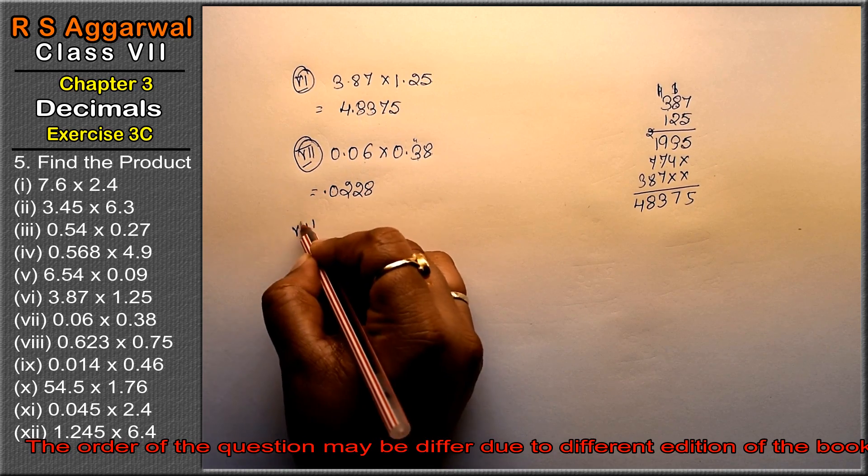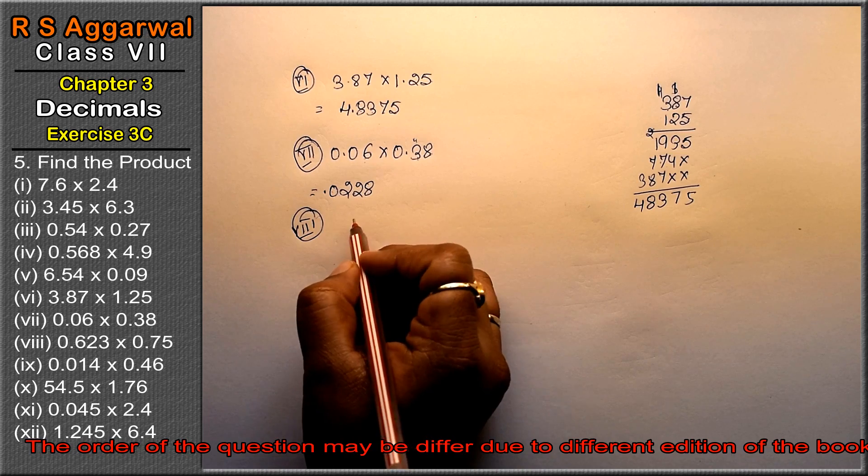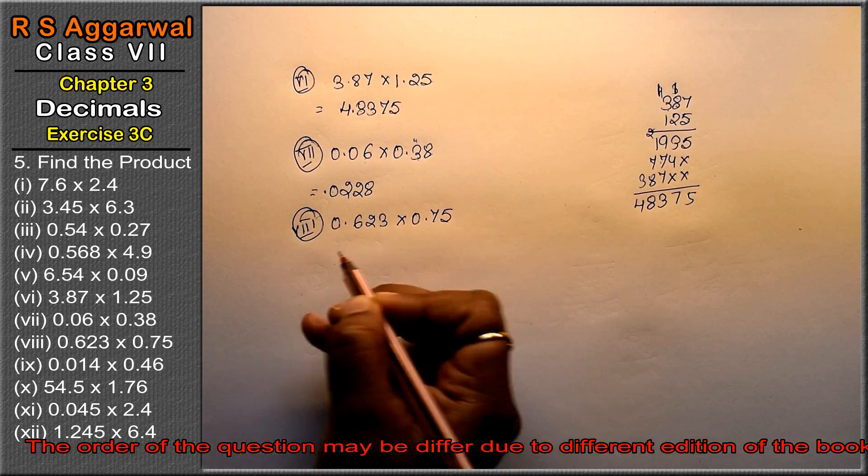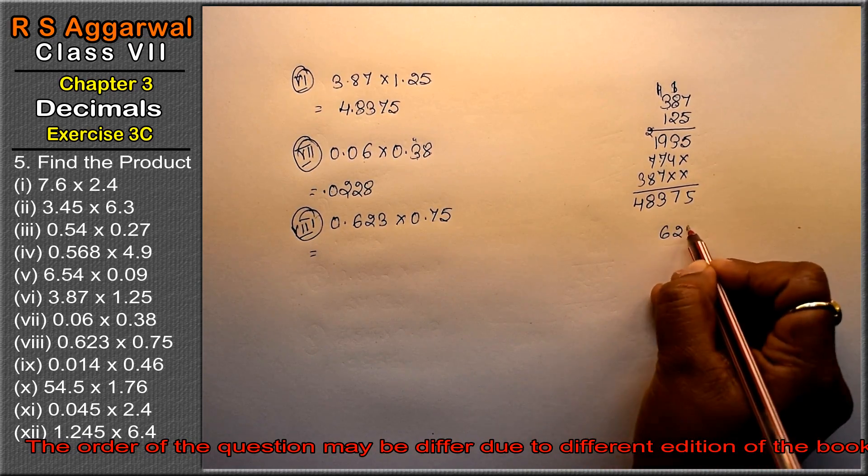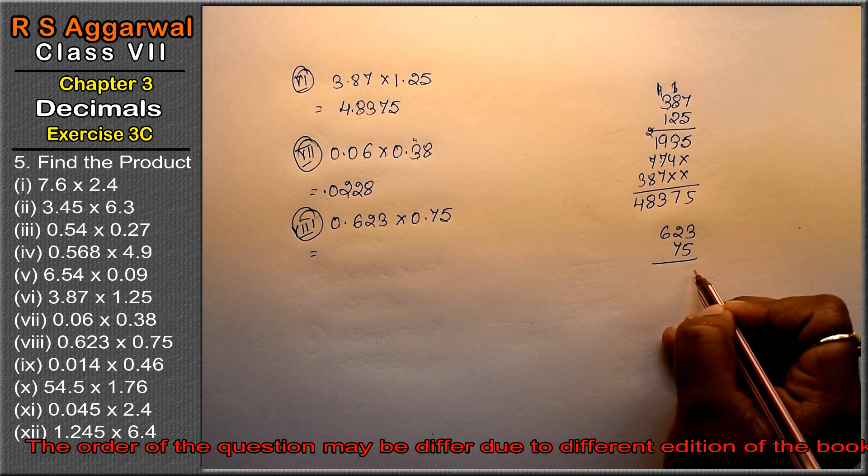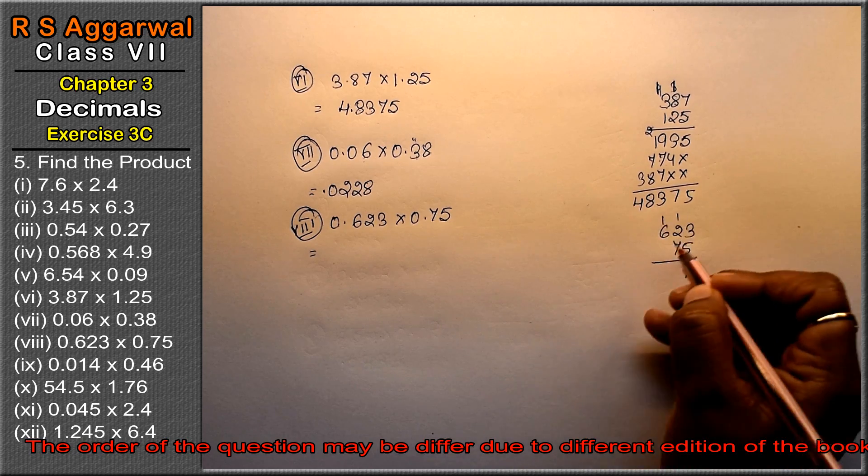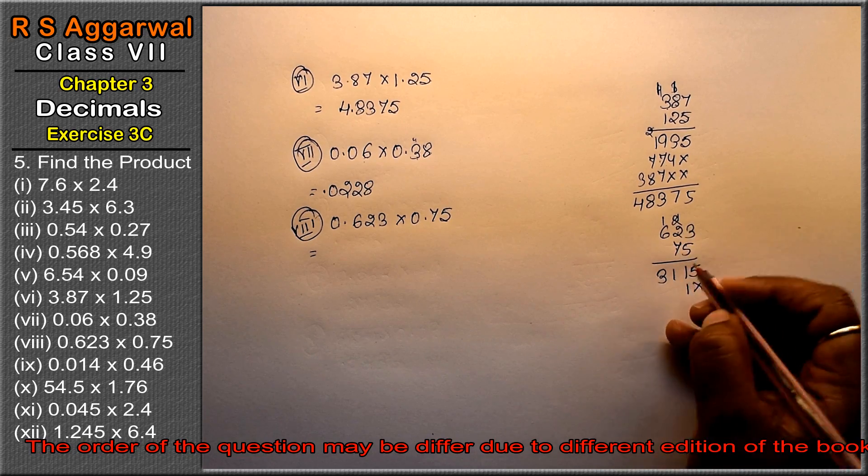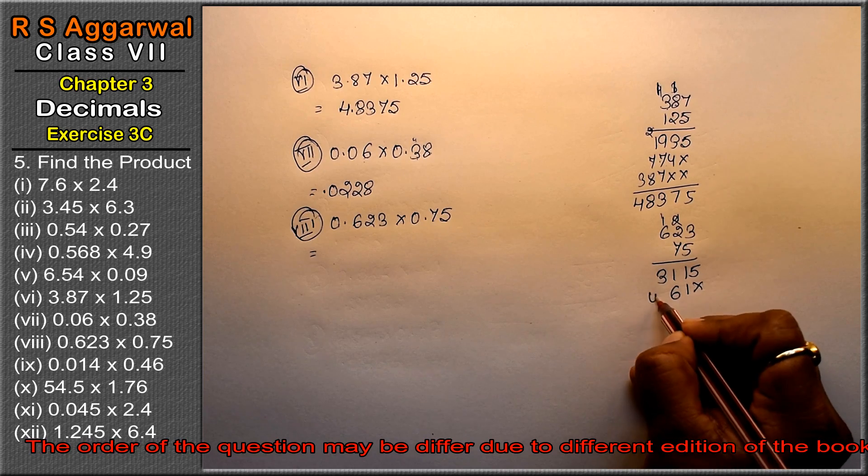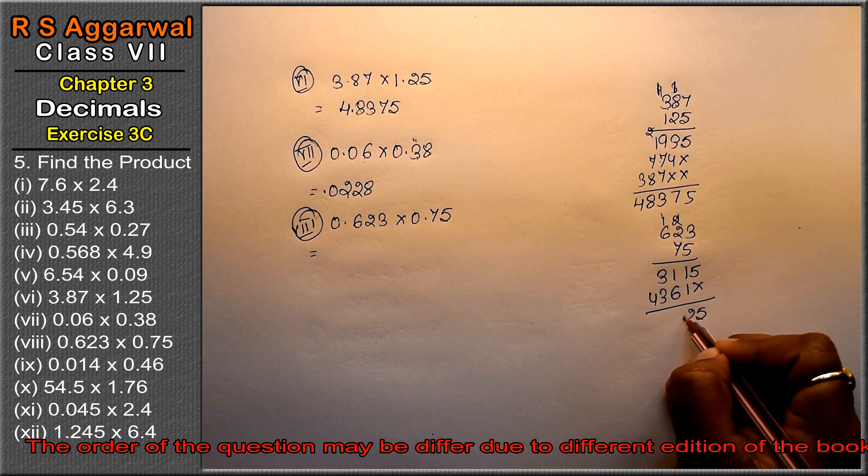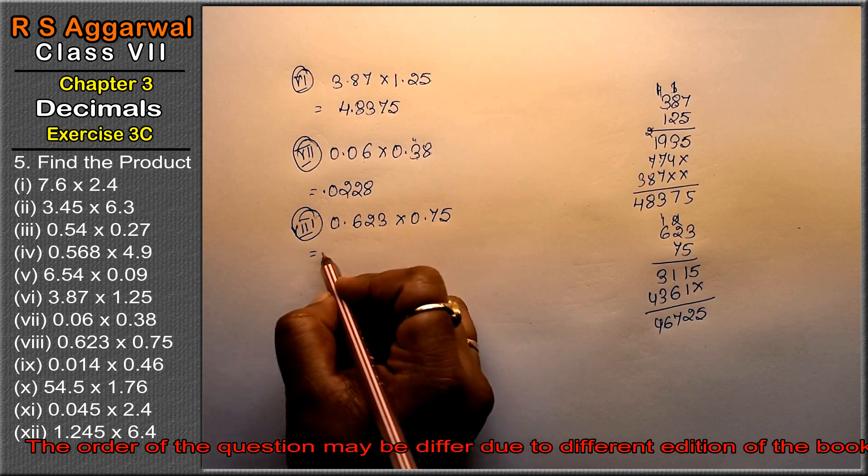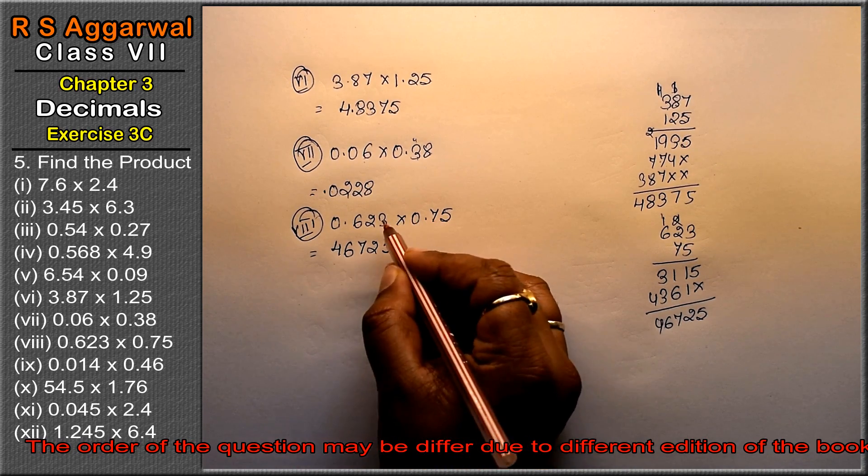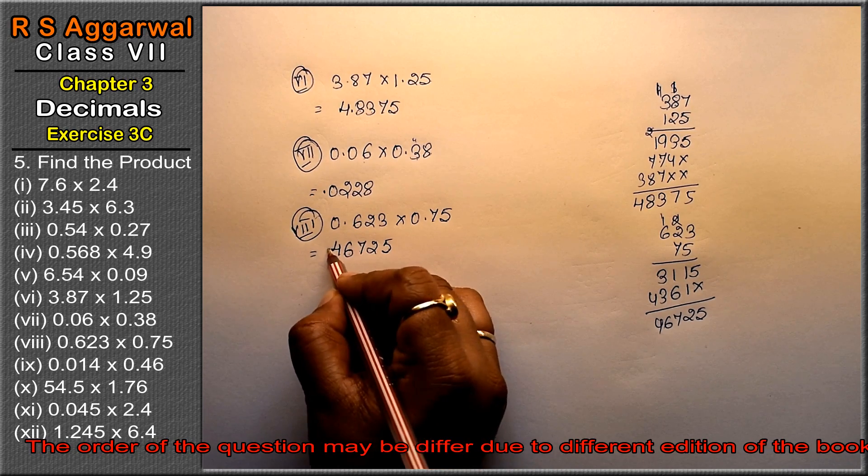Let's do eighth part: 0.623 into 0.75. Multiply 623 by 75. 5 times 3 is 15, 5 times 2 is 10 and 11, 5 times 6 is 30 and 31. Then 7 times gives the second row. Add: 46725. Point: 3 plus 2 is 5 decimal places. Count 1, 2, 3, 4, 5 from right, so 0.46725 is the answer.